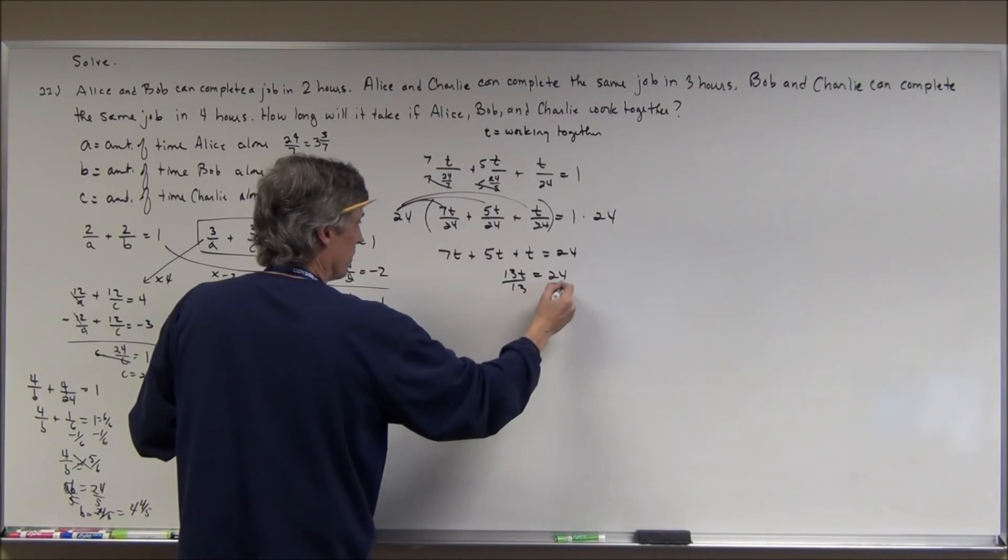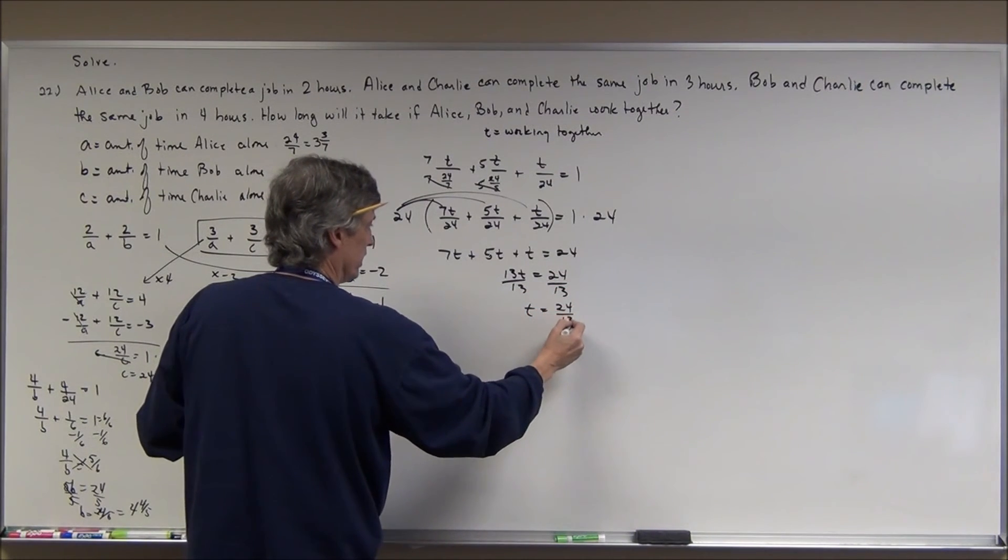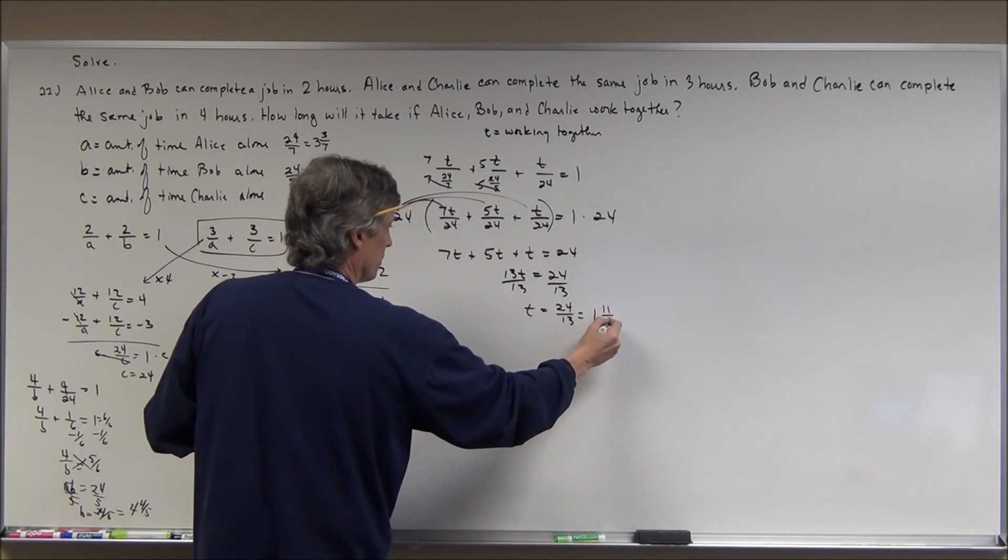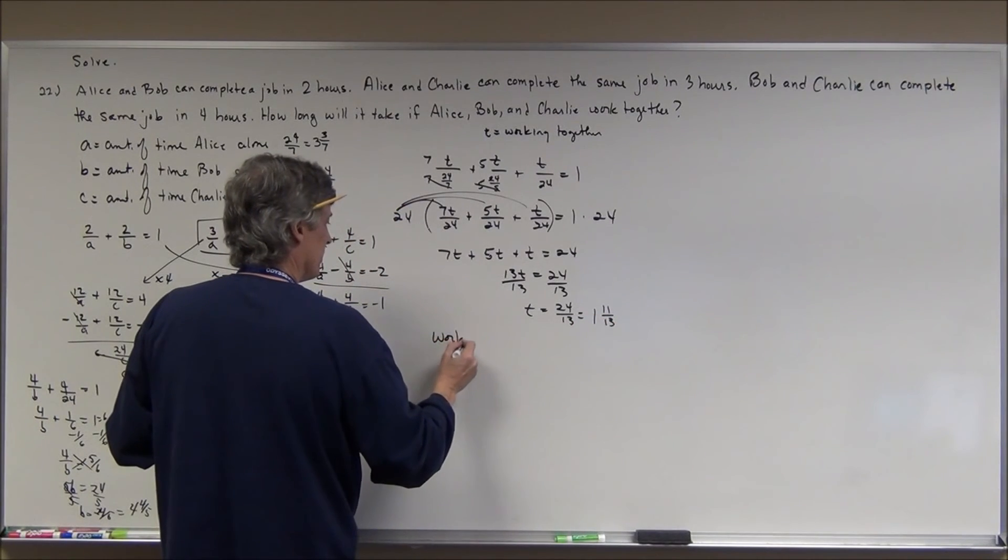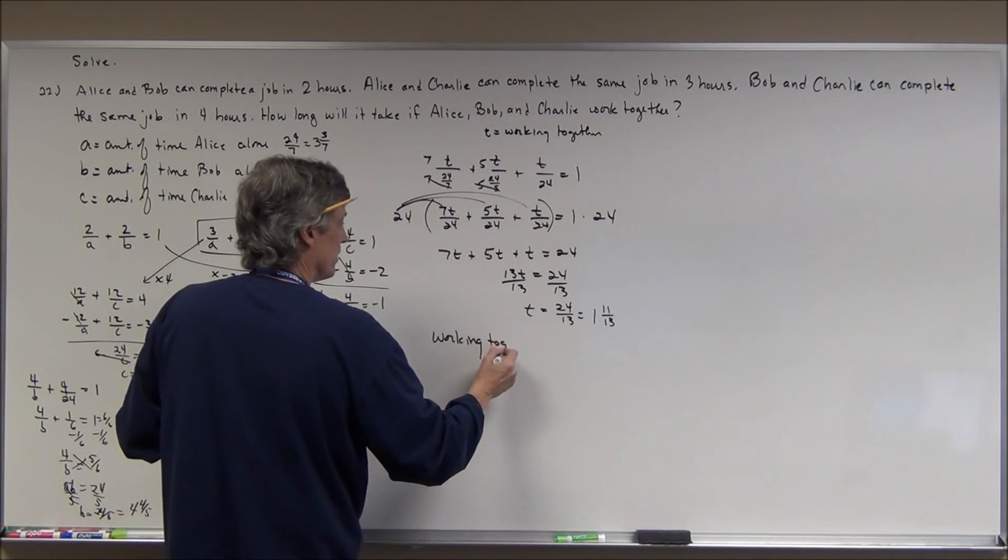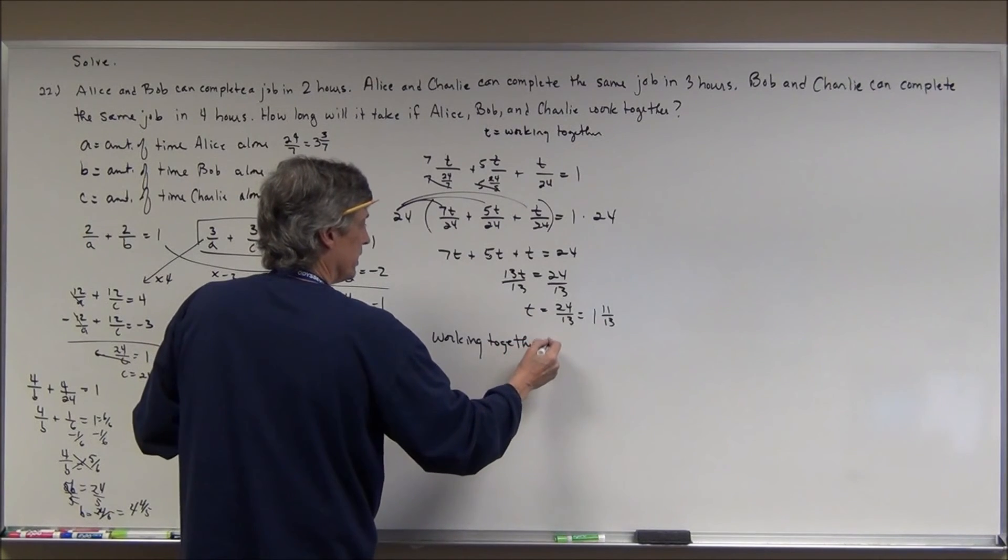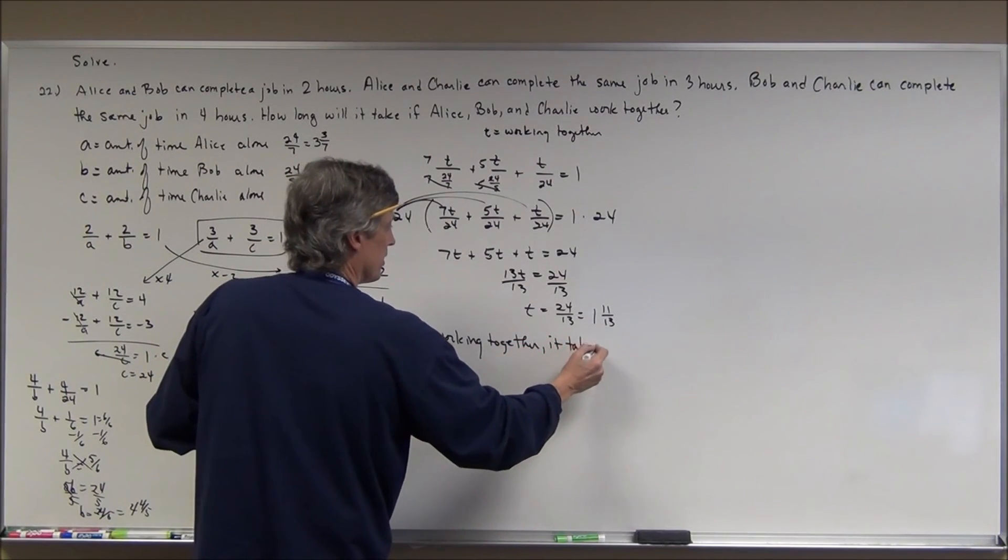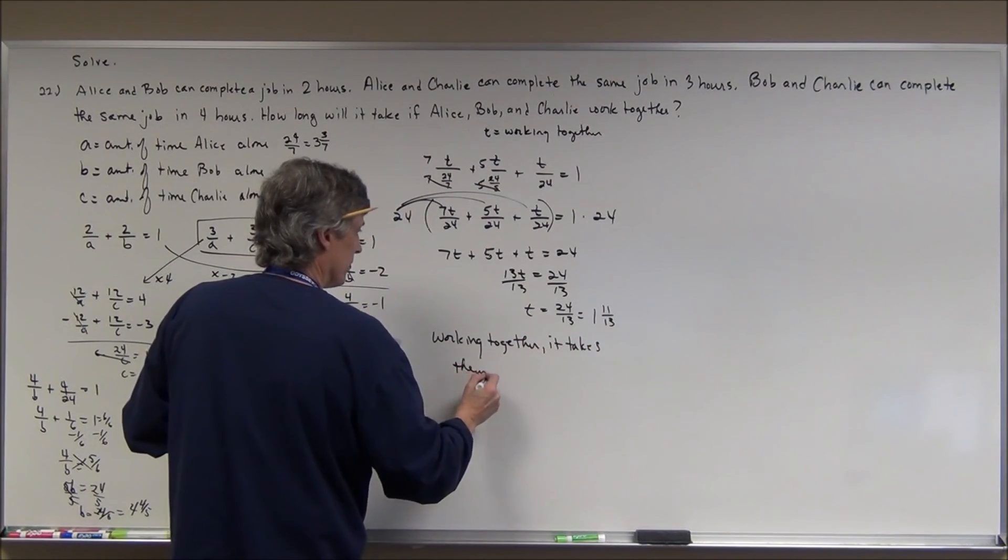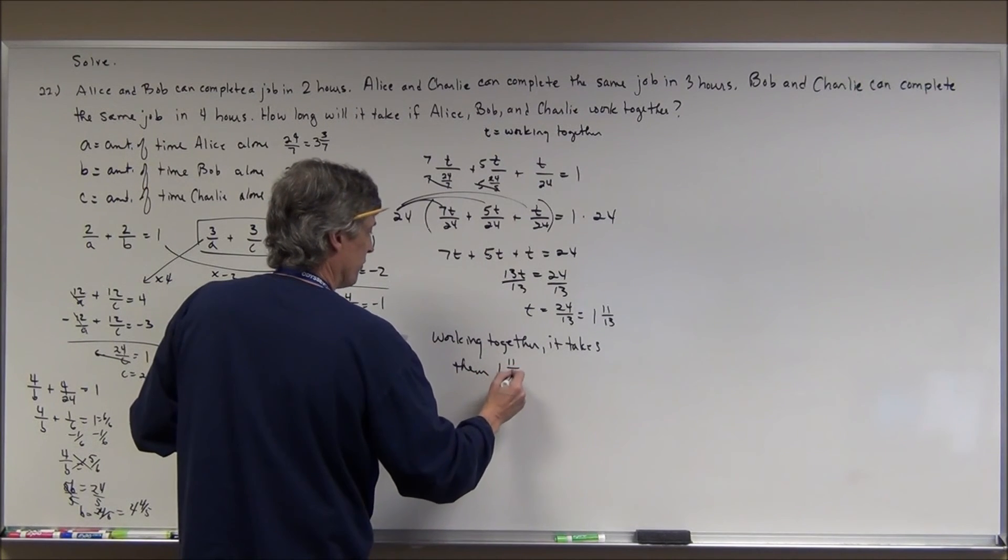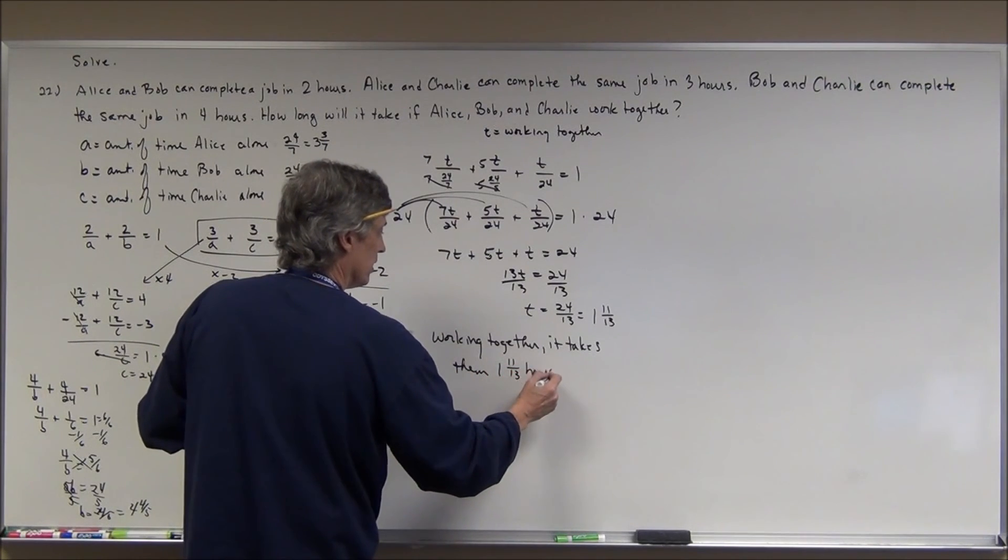Divide by 13. T is equal to 24 thirteenths, which is 1 and 11 thirteenths. So, working together, it takes them 1 and 11 thirteenths hours to do the job.